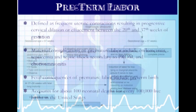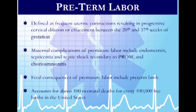Preterm labor by definition is contractions occurring between the 20th and 37th week of gestation. Maternal complications of premature labor include endometritis, sepsis, septic shock, PROM (premature rupture of membranes), and chorioamnionitis — infection in the amniotic fluid. Fetal consequences can include premature birth, accounting for about 100 deaths per 100,000 infants in the US annually.